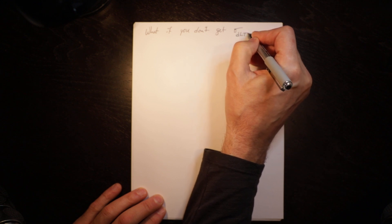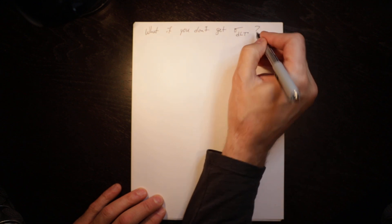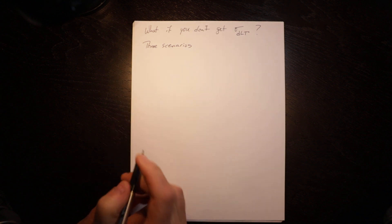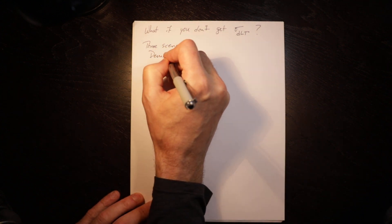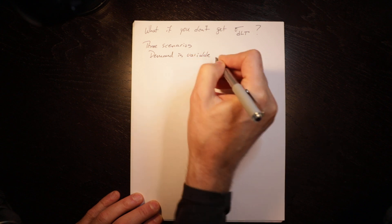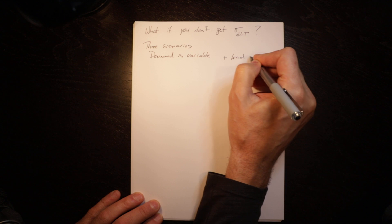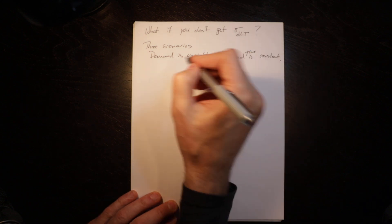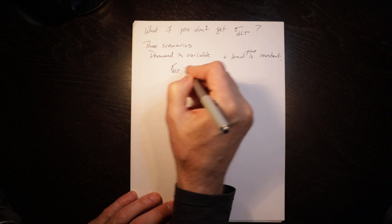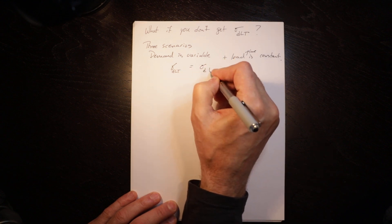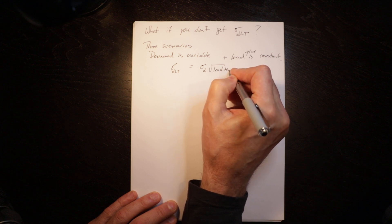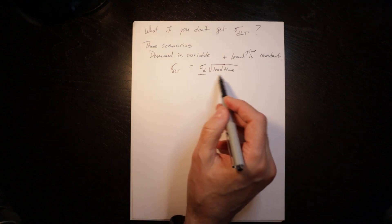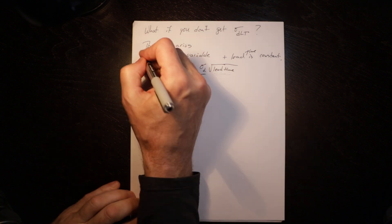What if you don't get the standard deviation of demand over lead time directly? There are three scenarios. The first scenario is demand is variable and lead time is constant. In that circumstance, the standard deviation of demand over lead time is equal to the standard deviation of demand times the square root of lead time. If demand is variable, you'll be given the standard deviation, you know what lead time is — it's fixed — and that's how you calculate it.